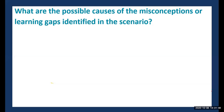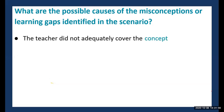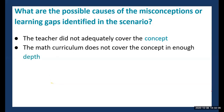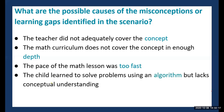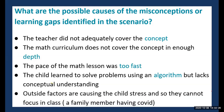What are the possible causes of the misconceptions or learning gaps identified in this scenario? Possibly the teacher did not adequately cover the concept, or the math curriculum does not cover the concept in enough depth. The pace of the math lesson was too fast. The child learned to solve problems using an algorithm but lacks conceptual understanding. Or outside factors are causing the child stress — for example, a family member having COVID. These are all possible causes of misconceptions or learning gaps.